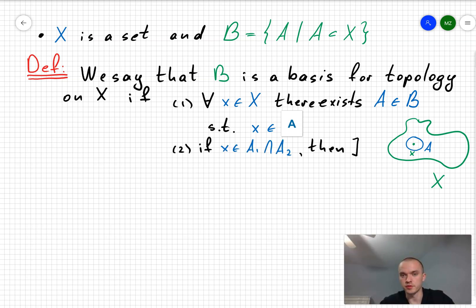The second assumption is really interesting. If you're going to take any two elements of your bases, A1 and A2, intersect them, and then your intersections then empty, then for every element inside your intersection, you always must have some other element A3 of your base, such that that element of your base A3 contains x and is subset of A1 intersection A2.